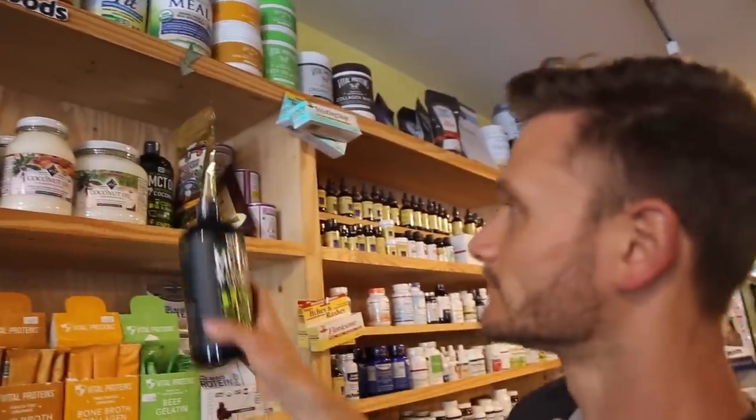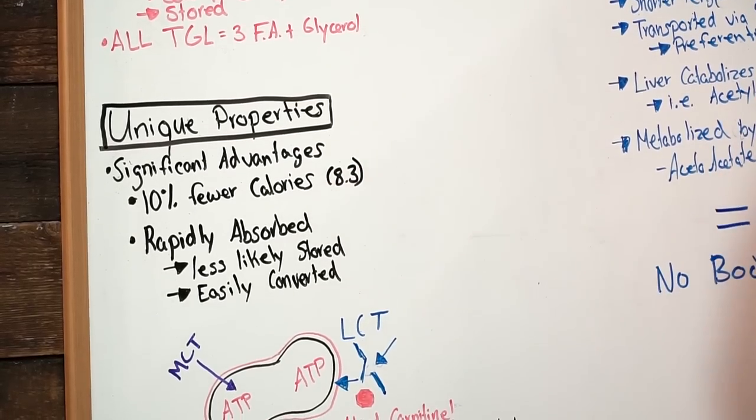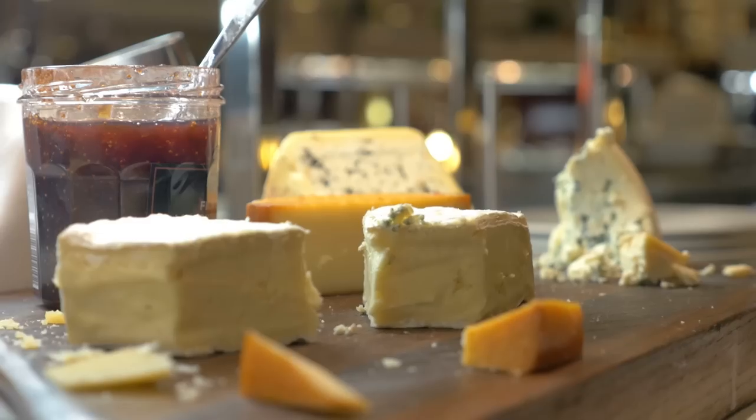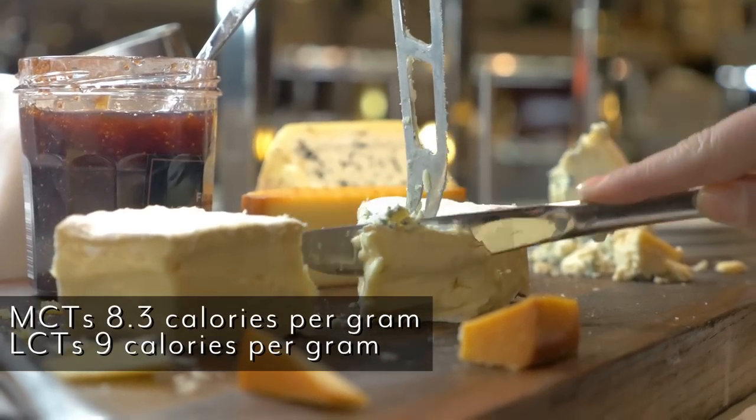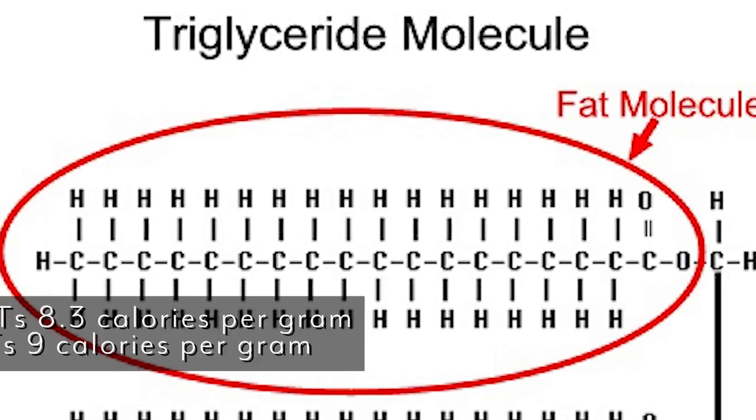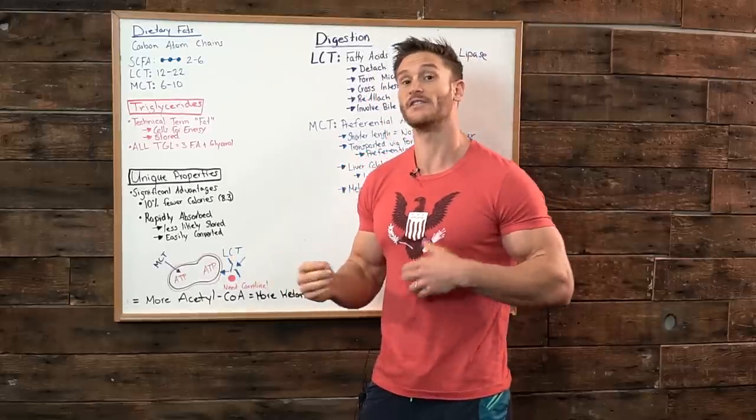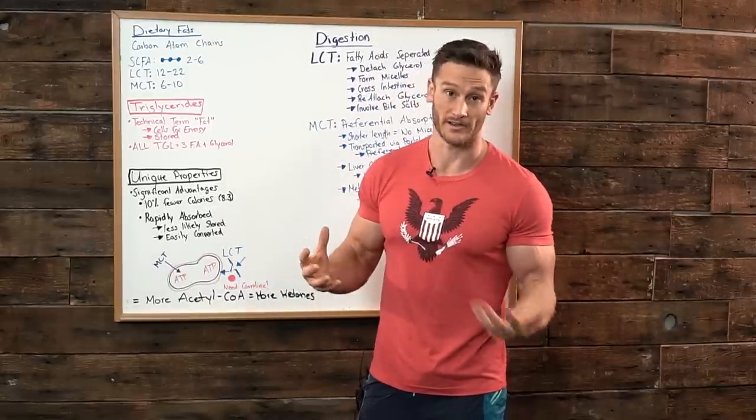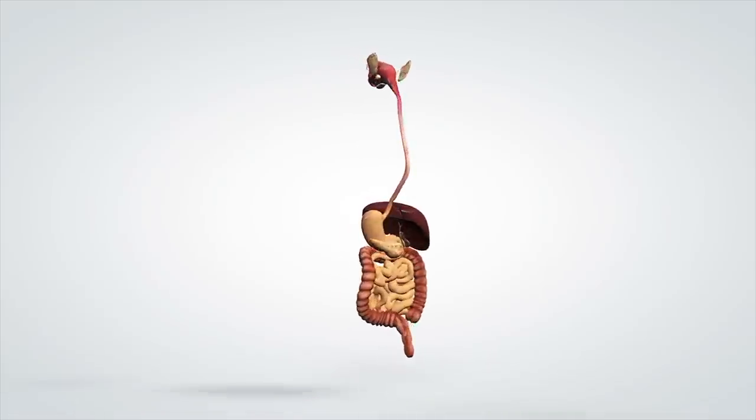There's some unique properties when it comes down to MCTs. The first one is that it's significantly lower calories. Ten percent lower calories to be exact compared to other fats. Most fats are nine and nine and a half calories per gram whereas MCTs are only eight. The reason is because the shorter chain makes them digested quite a bit easier and they're converted into energy. Because they are a shorter chain they're absorbed significantly faster.